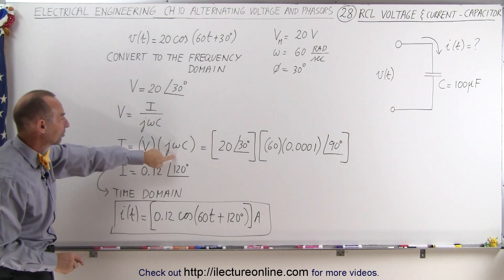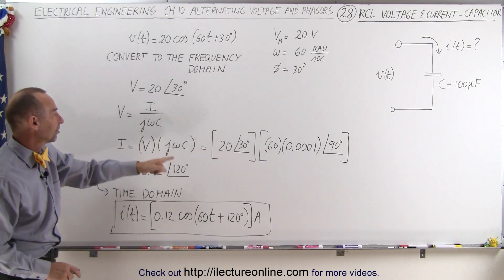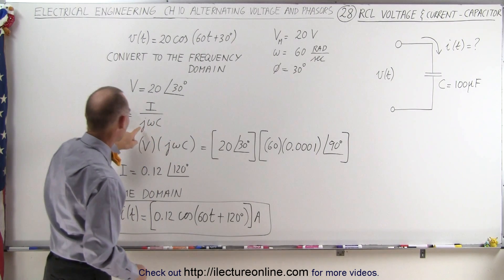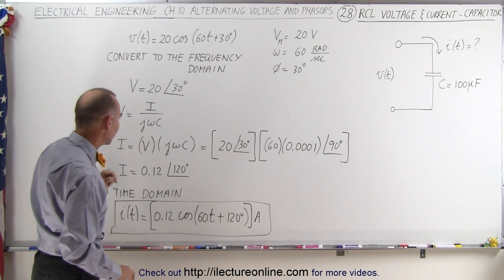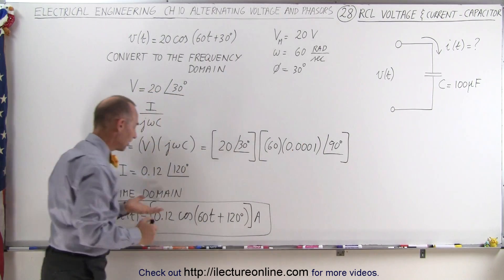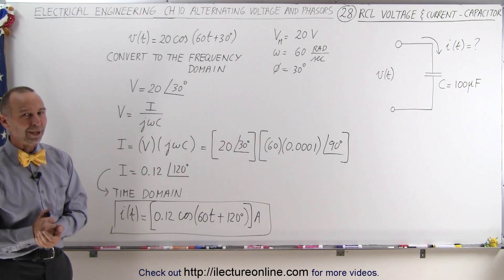Then we realize that the voltage is the current divided by jωc, or the current is V times jωc. V we already got from our original equation. jωc is simply ω times the capacitance. The phase angle is provided by j, which is a 90 degree phase angle. We multiply the amplitudes, add the phase angles, and then we convert back to the time domain. It's pretty straightforward when we do it that way.